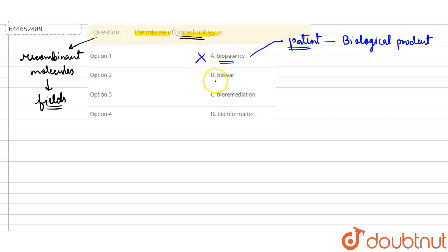Let's move on to option B: biowar. Biowar is a type of war in which different microorganisms can be altered and used. These microorganisms can be used to spread diseases. So yes, this can be the misuse of biotechnology.